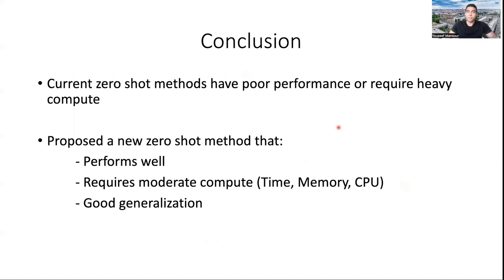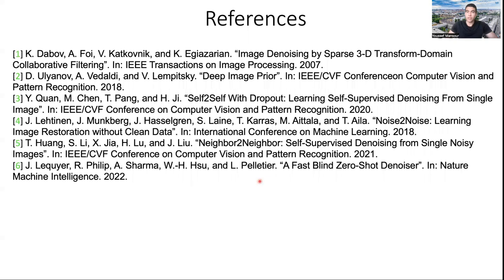So to conclude, we've seen the problems that are associated with the current zero-shot methods. And we propose a new method that performs well, requires moderate compute in terms of memory. It could be run on a CPU and also generalizes well. Thank you for your attention and here are our references.